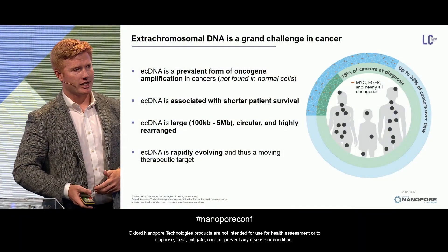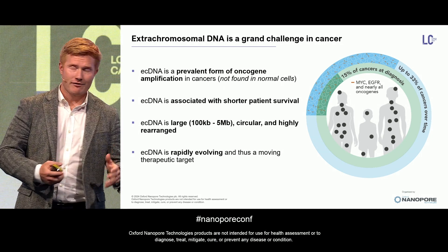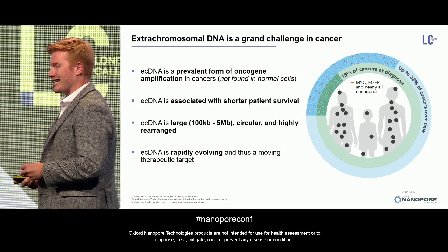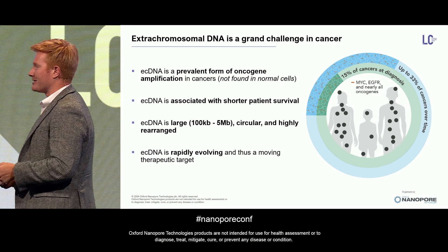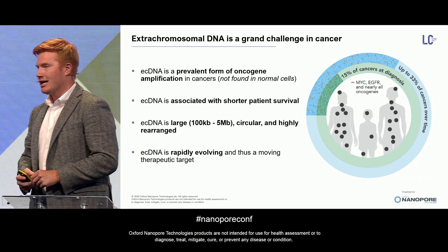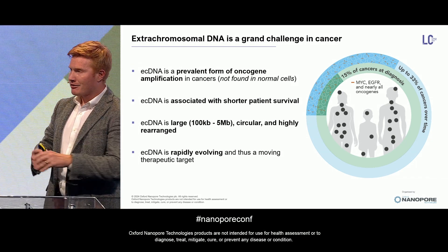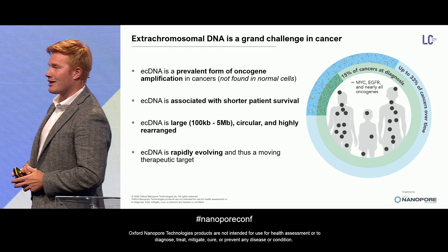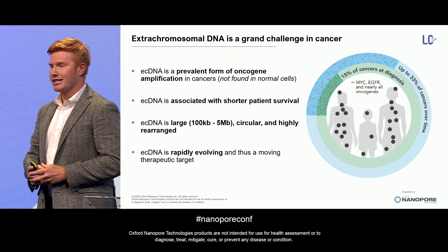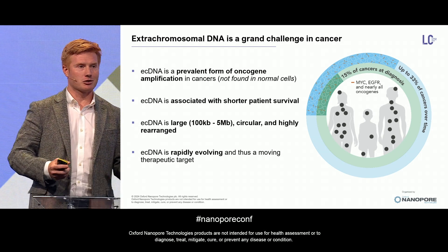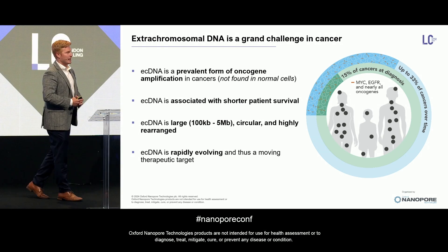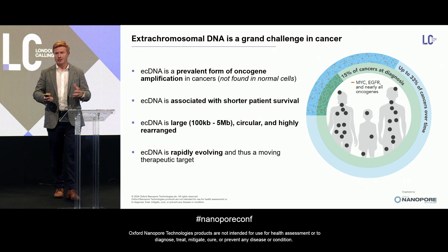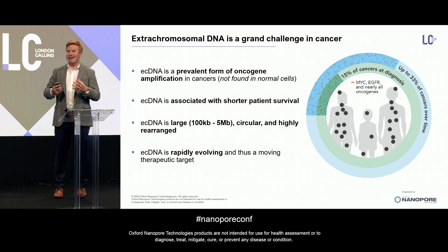Extra-chromosomal DNA, or ECDNA, is a very prevalent form of oncogene amplification found in cancers specifically, not in normal cells. About 15% of cancers at diagnosis will have extra-chromosomal DNA, but up to 33% of cancers overall. In specific aggressive types of cancers, like glioblastomas, it's found in nearly every case.